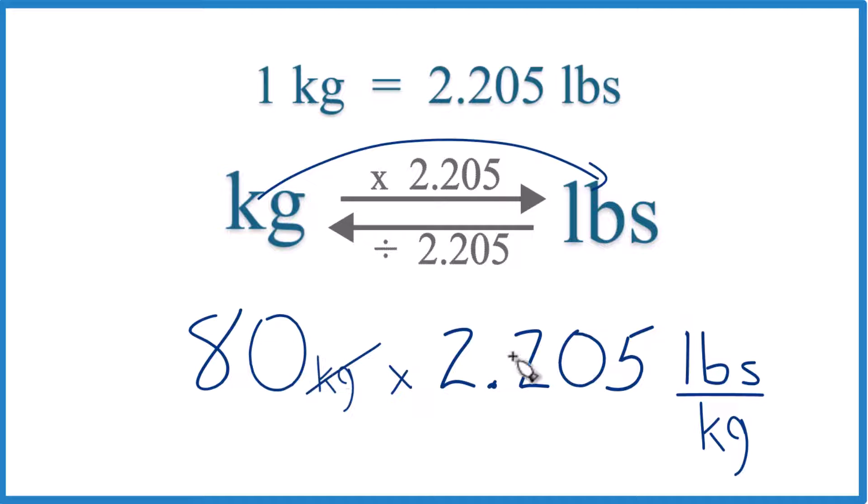So when we multiply, we have kilograms on top and the bottom. That cancels out, leaves us with pounds.